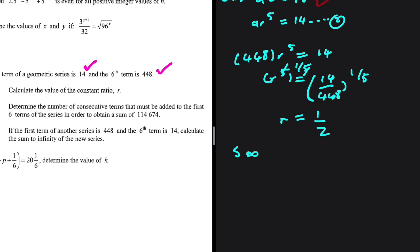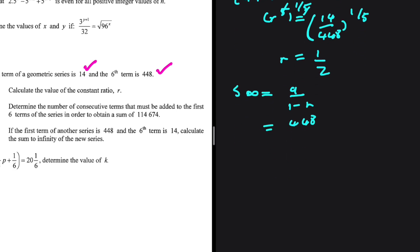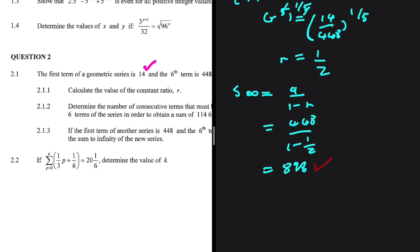We have our common ratio: R equals 1/2. The sum to infinity equals A divided by (1 minus R), which is 448 divided by (1 minus 1/2), and this equals 896. That is our sum to infinity.